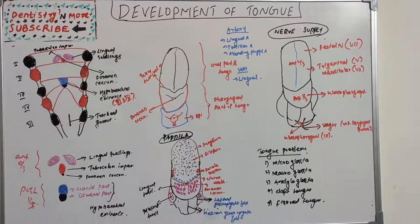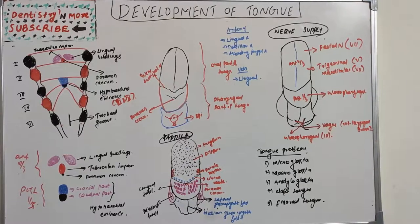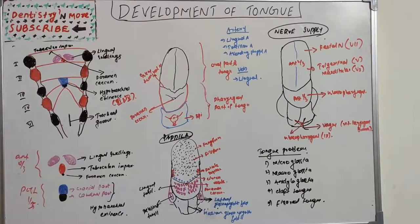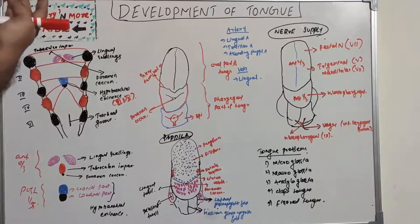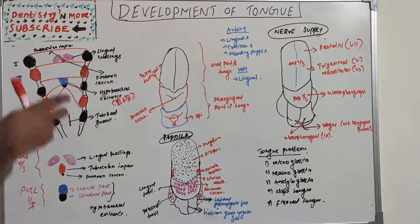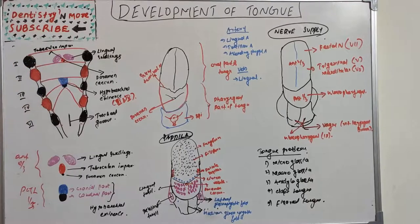The tongue is the largest single muscular organ inside the oral cavity, which lies relatively free. The tongue develops in relation to the pharyngeal arches. We have pharyngeal arches one, two, three, four, and five, along with pouches and pharyngeal clefts. Most structures in the head and neck region develop from the primitive pharyngeal arches.